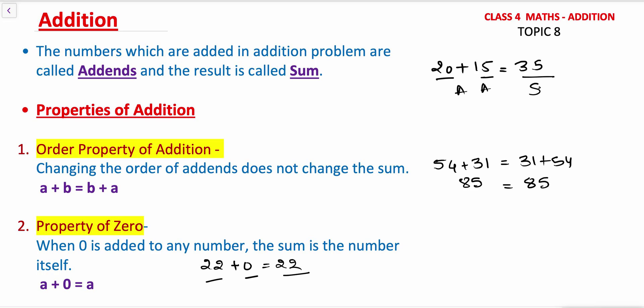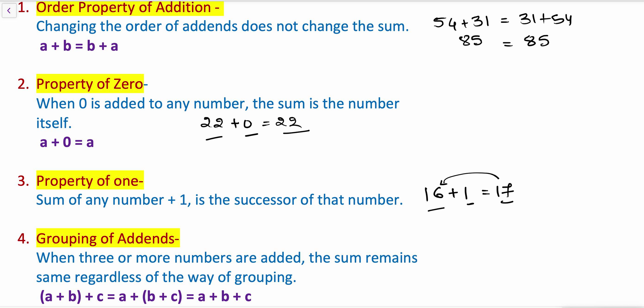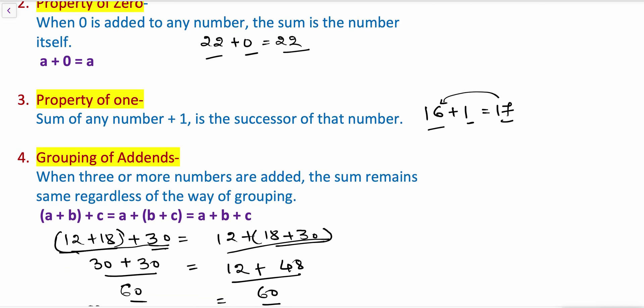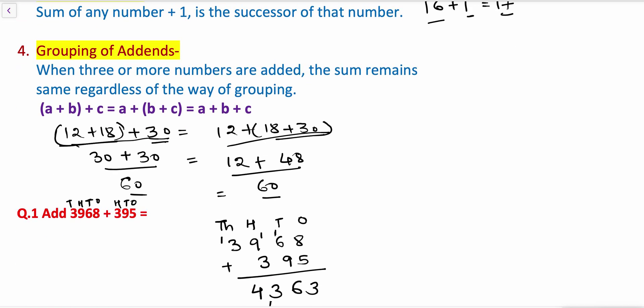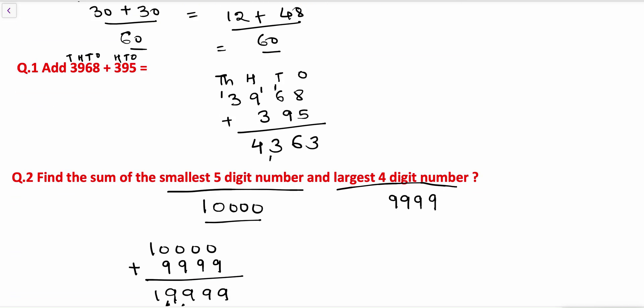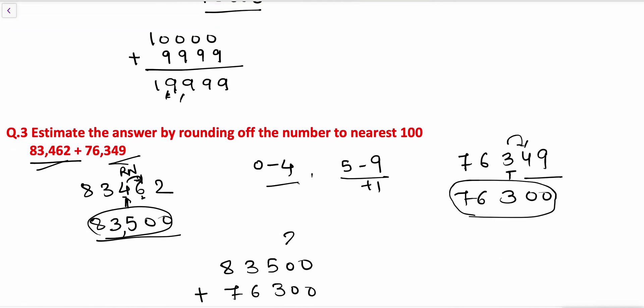So here, first we have seen what addition is and what addends are — the numbers which are added are called addends, and the answer we get is the sum. We have seen the properties of addition: the order property says changing the order of addends does not change the sum; the property of zero says if zero is added, the sum is the number itself; the property of one says if one is added to any number the sum is the successor of that number; and the grouping property says grouping of addends does not change the sum. Then we solved questions including the sum of the smallest 5-digit number and largest 4-digit number, and addition with rounding off.